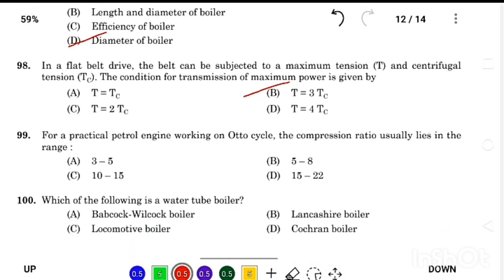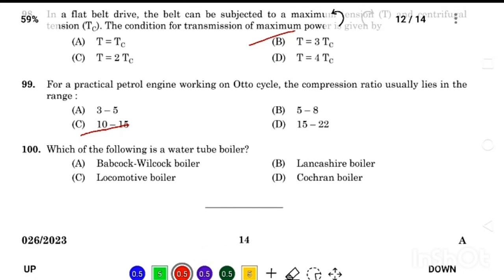For a practical petrol engine working on Otto cycle, the compression ratio usually lies in the range of Answer Option C, 10 to 15. Which of the following is a water tube boiler? Answer Option A, Babcock and Wilcox boiler.